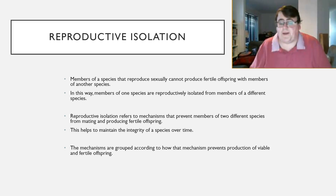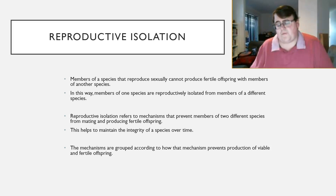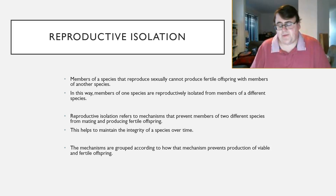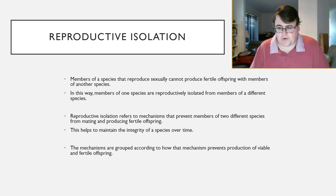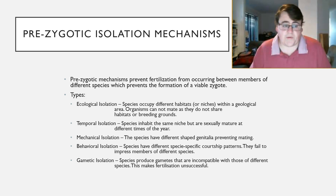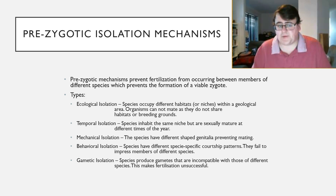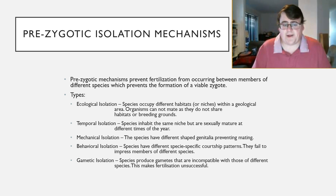It helps to maintain the integrity of the species over time. We have different forms of reproductive isolation, and we group them according to how they prevent those species from producing fertile offspring. There are two different types of isolation mechanisms: prezygotic and postzygotic isolation mechanisms.